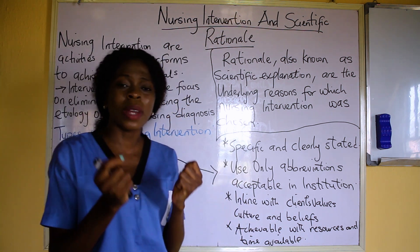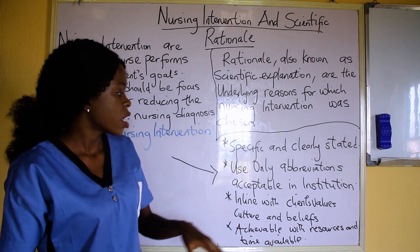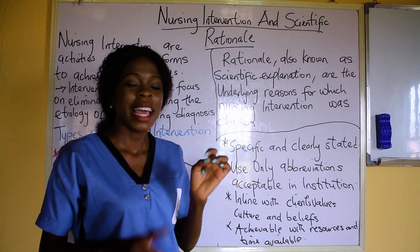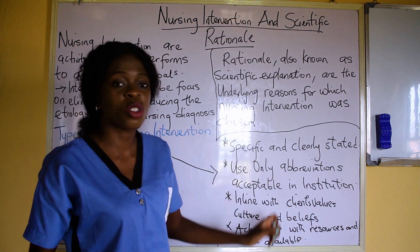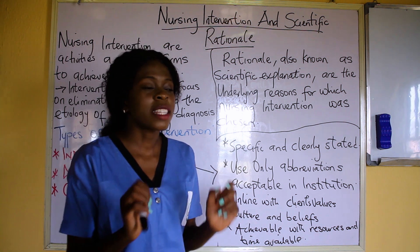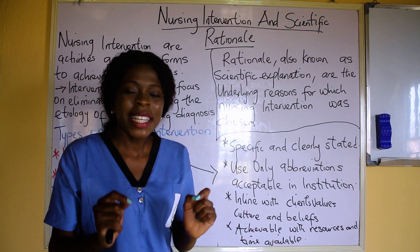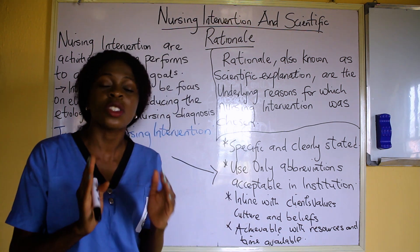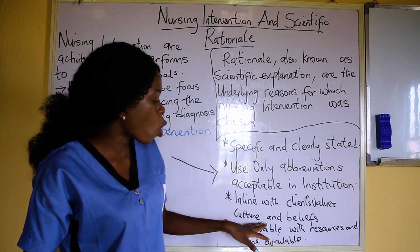There are particular things to know when writing nursing interventions. First, it should be specific and clearly stated. Second, use only abbreviations acceptable in institutions — as students, I advise you don't abbreviate at all; give the full meaning. For example, some students write 'give prescribed PCM,' but not everyone knows PCM is paracetamol. The best thing is to write it in full. I don't support abbreviation when it comes to examinations.